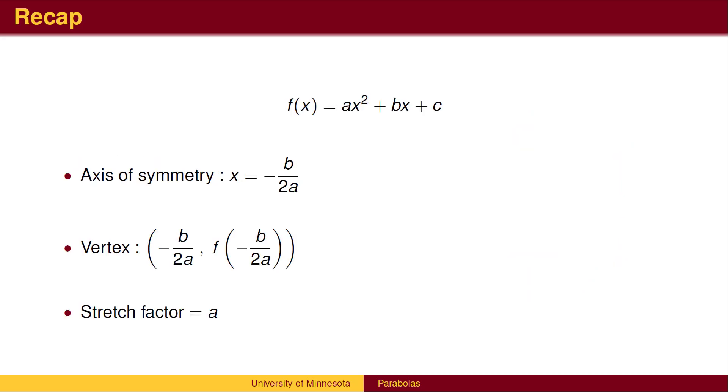To recap, the axis of symmetry and x-coordinate of the vertex is x equals negative b over 2a. The y-coordinate of the vertex can be found by plugging the x value back into the original equation. The parabola is then stretched vertically by a factor of a.